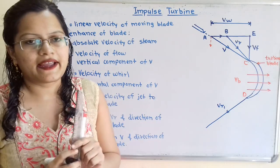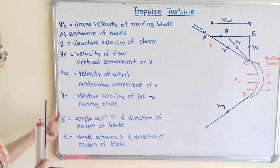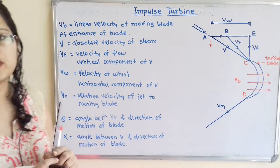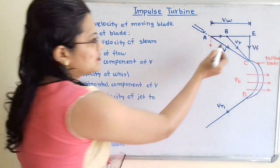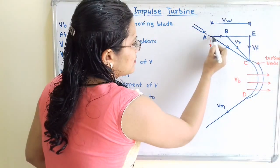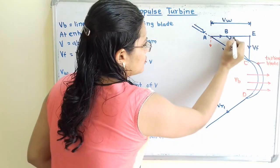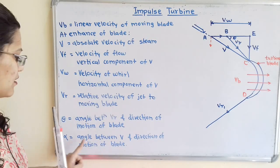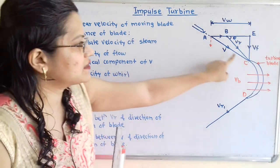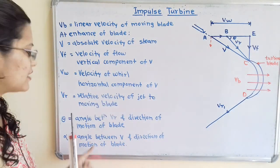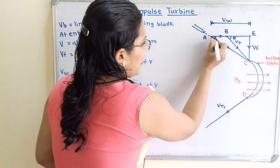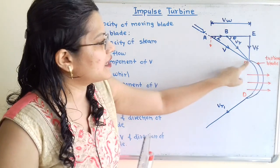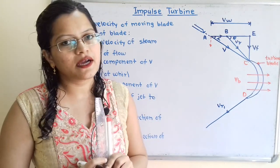Angle theta is the angle between relative velocity Vr and the direction of motion of the blade. Angle alpha is the angle between absolute velocity V and the direction of motion of the blade. In this way the velocity triangle at the entrance is completed.